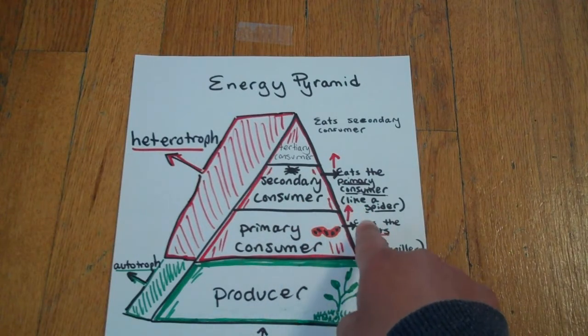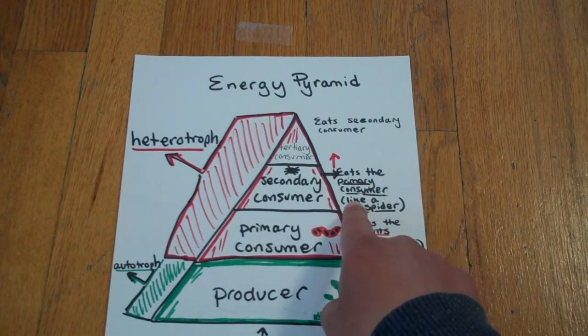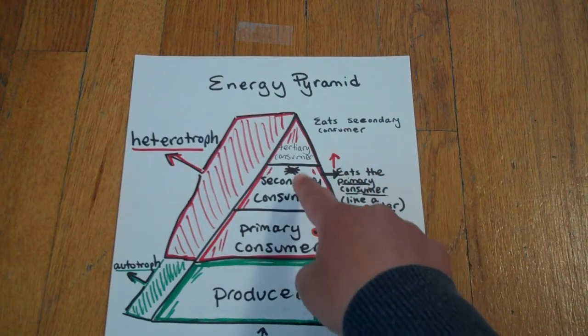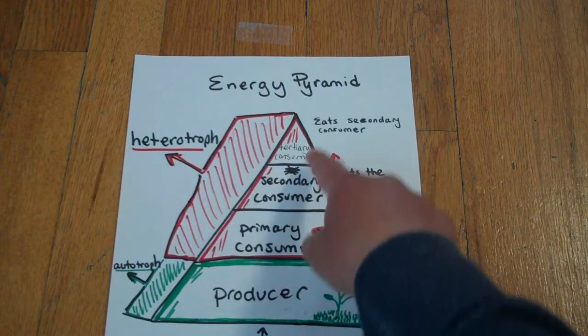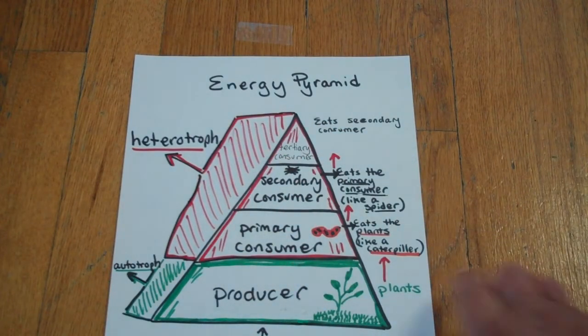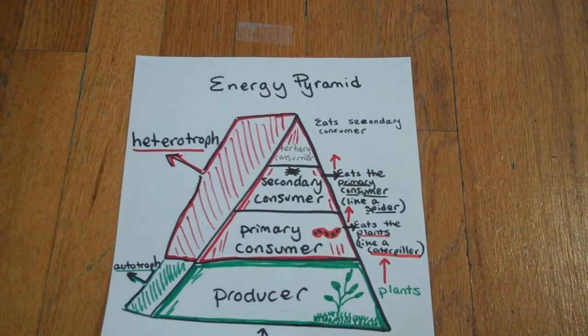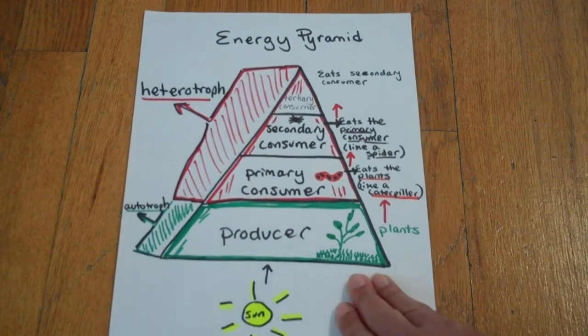When the caterpillar is eaten by the spider, it is eaten by a secondary consumer. And then the spider could be eaten by something else. That's called a tertiary consumer. And that's how energy can be moved up in the food pyramid.